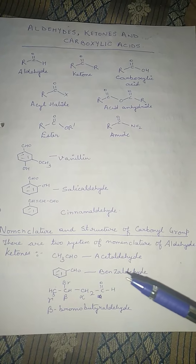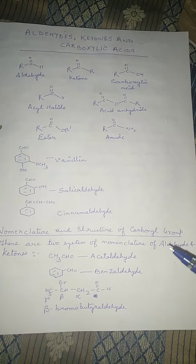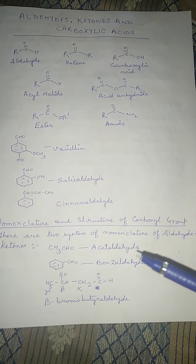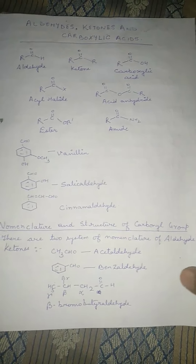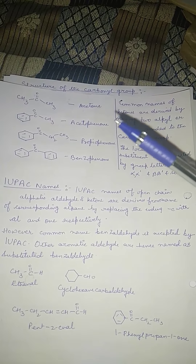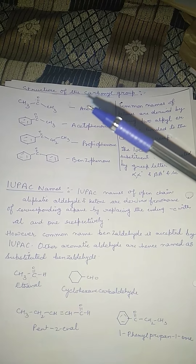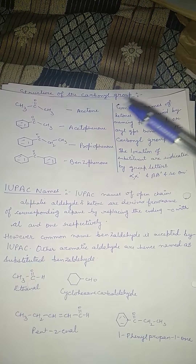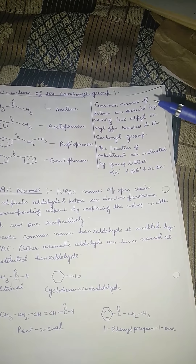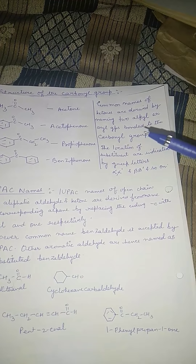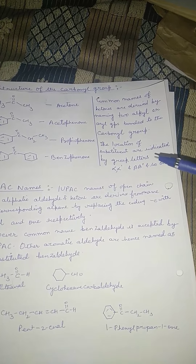Coming to nomenclature and structure of the carbonyl group — there are two systems: common names and IUPAC. Common names include acetaldehyde, benzaldehyde, beta-bromobutyraldehyde, acetone, acetophenone, propiophenone, and benzophenone. Acetone is generally used as a solvent to remove stains or paints. Common names of ketones are derived by naming the two alkyl or aryl groups bonded to the carbonyl group; substituent locations are indicated by Greek letters alpha and beta.